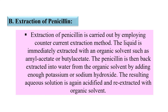The next step is the extraction of Penicillin, using the Counter Current extraction method. The liquid is immediately extracted with an organic solvent like Amyl Acetate or Butyl Acetate, using the Port-Bialenac Counter Current extractor. Penicillin can then be back-extracted into water from the organic solvent by adding enough Potassium or Sodium Hydroxide, which also raises the pH from 7 to 7.5. Finally, that acetate solution is again acidified and re-extracted with organic solvent. This shift between water and solvent ultimately helps in the purification of Penicillin.